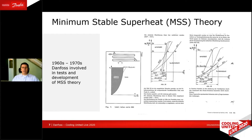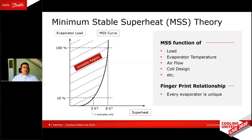In the 1960s and 70s, many measurements have been done and a theory has been developed, which is called MSS — Minimum Stable Superheat. That theory says that every evaporator has a certain curve. On the left-hand side of that curve, you cannot have a stable control; on the right-hand side, you can. That curve looks different for every evaporator. It depends on the load, the evaporating temperature, the airflow across the evaporator, and the evaporator design — the coil design. It's really a kind of fingerprint for every evaporator. In general, they all look somewhat similar because you need more superheat when you have a higher capacity.